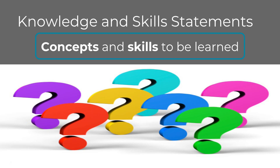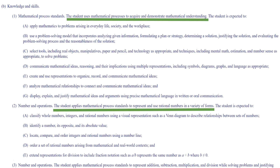Following the strands are the knowledge and skill statements. These describe what particular concepts and skills are to be learned within the strands. Some strands have multiple knowledge and skill statements, while others may just have one. Here's a portion of the knowledge and skill statements that follow the strands — you can see that they're underlined in green. At this time, you may want to pause the video to locate and underline the knowledge and skill statements in your version of the TEKS. This is all just meant to help us understand how the TEKS are organized.